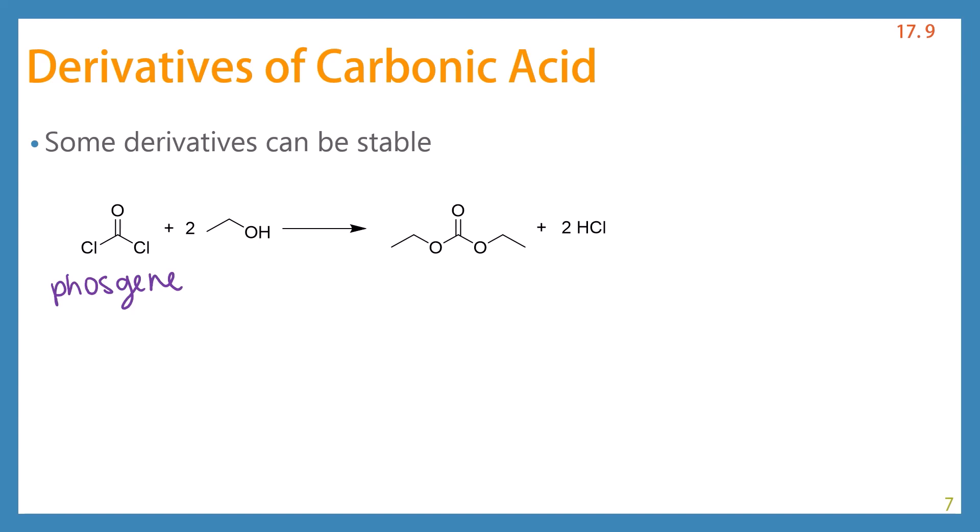So in this case, we have a diester. This would be called diethylcarbonate. So notice it still follows our ester protocol. We're referencing our alcohol, the fact that we have two of them, and the carboxylate that they would have come from. And we have two equivalents of hydrochloric acid as our side product.